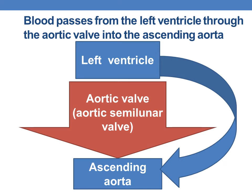Once the blood enters the left ventricle, it passes through the aortic valve, also called the aortic semilunar valve, into the ascending aorta. So we have two semilunar valves: the pulmonary semilunar valve and the aortic semilunar valve. The aortic semilunar valve helps the blood flow from the left ventricle into the ascending aorta.